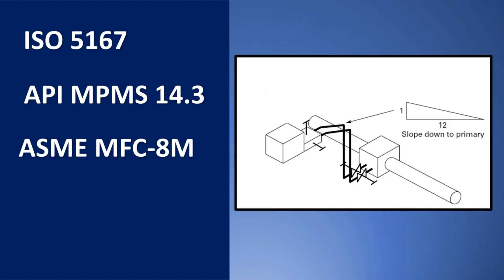Similar to that, how should the transmitter be installed? For gas service, it should be above the tapping. There should be certain slope towards the pipe. Because of gravity, if there is any liquid, it will fall back into the thing. All of these amazing things are covered in this standard. And this MFC stands for measurement of fluid in closed conduit.